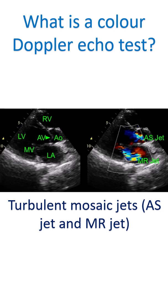By notation, flow of blood away from the probe is depicted as blue, and flow towards the probe is depicted as red.